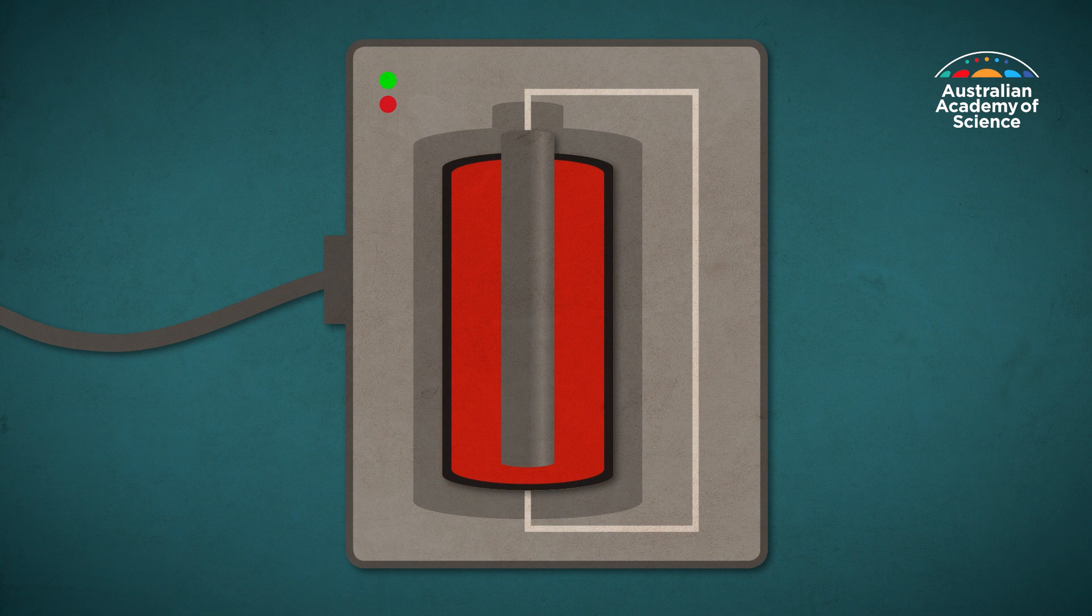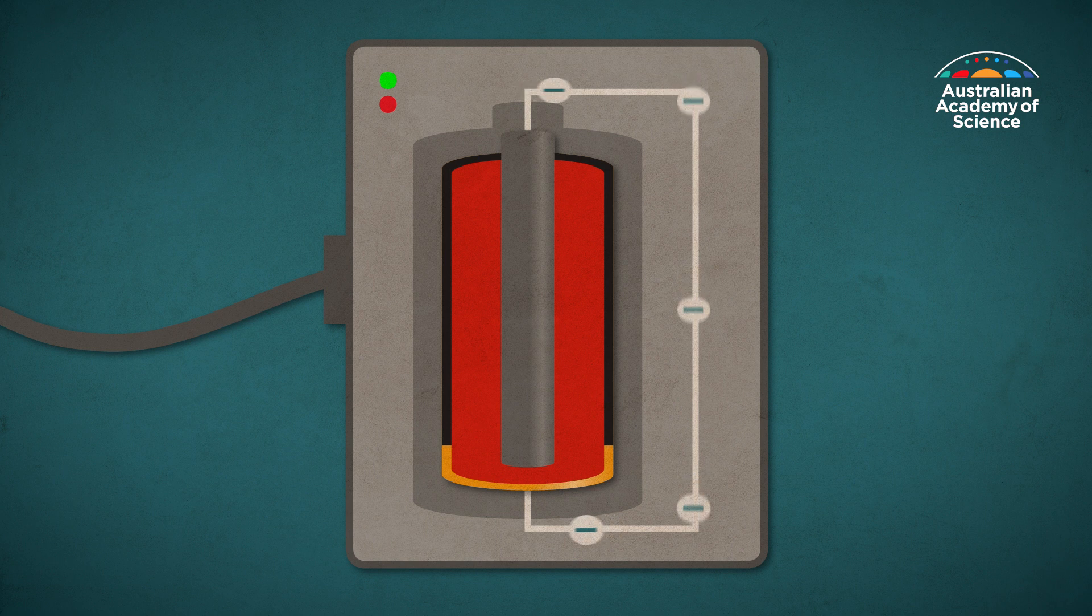Recharging a battery uses an outside electrical source to reverse this process, sending the electrons that the cathode took in back to the anode. But this process isn't perfect.